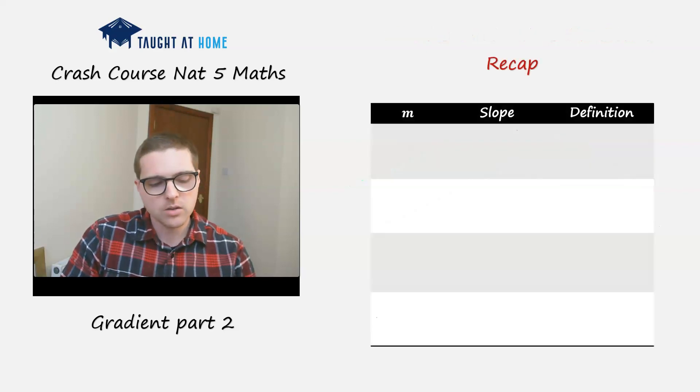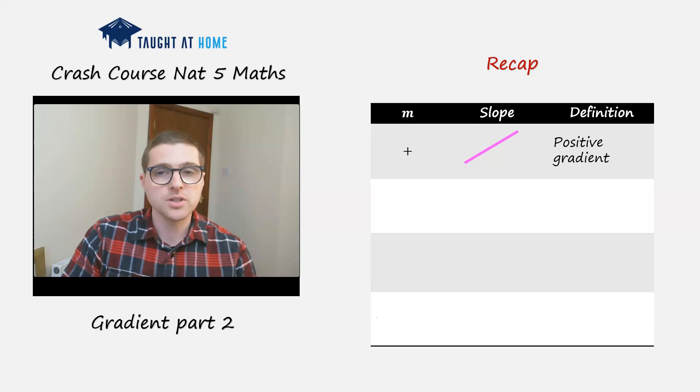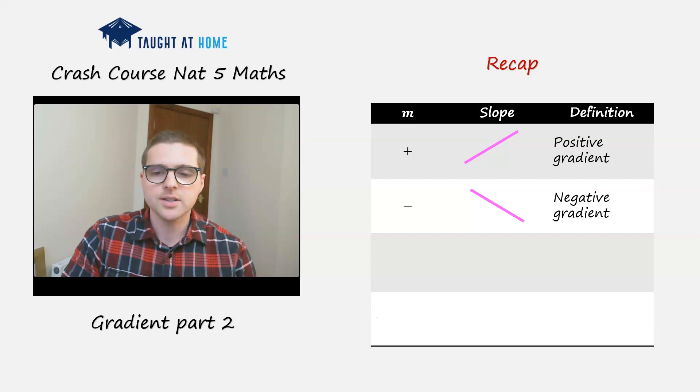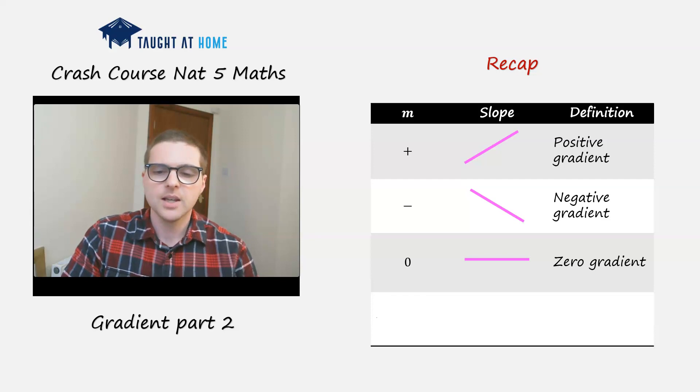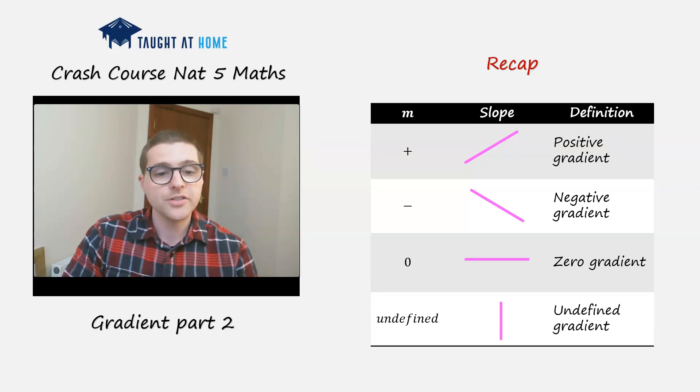So in recap, when the gradient m we calculate is a positive number, the slope from left to right is going upwards, and we say that it's a positive gradient. If the value you calculated is negative, then the slope from left to right is going downwards, and we call that a negative gradient. If the value of m you calculate is 0, then it's just a straight horizontal line, and we call that a 0 gradient. And if m is undefined, then it's just going to be a vertical line, and we call that an undefined gradient.